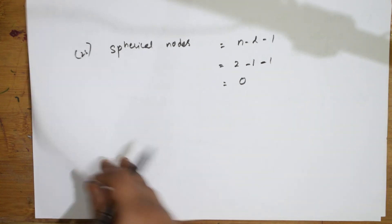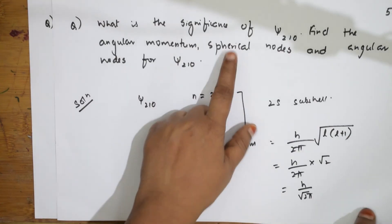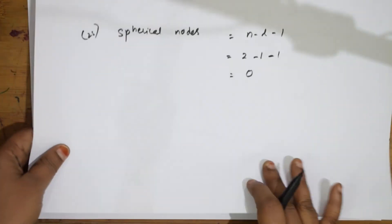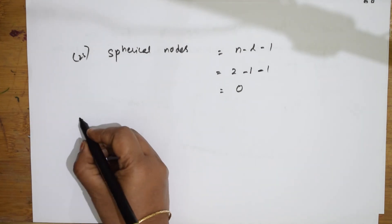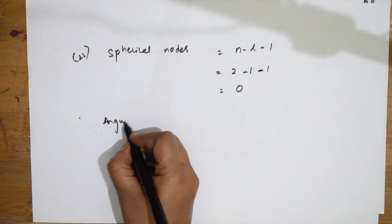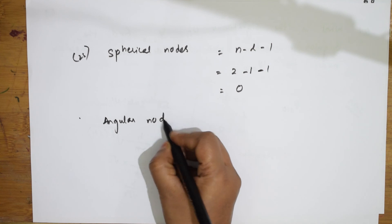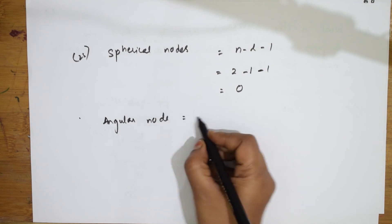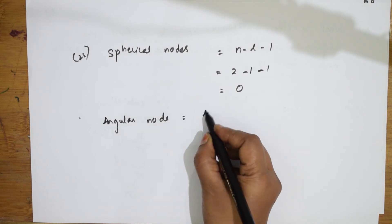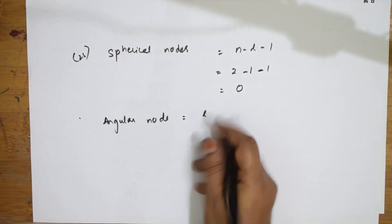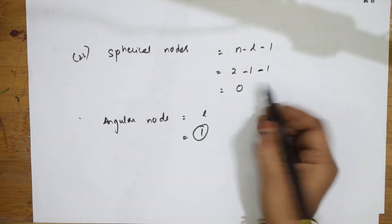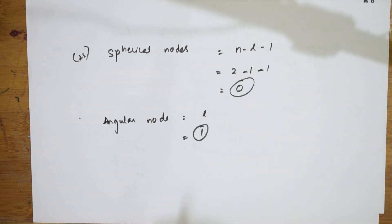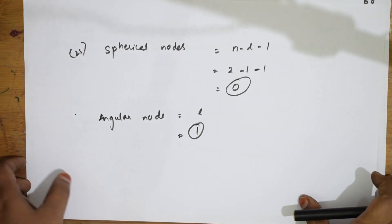For angular nodes: the formula is simply l = 1. So angular nodes = 1, and spherical nodes = 0. This completes the ψ₂₁₀ analysis.